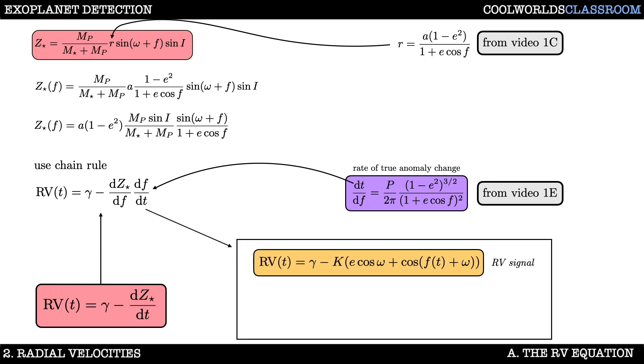After differentiating you should be able to show this result for the rv signal where k is a time invariable quantity known as the semi amplitude given by this. Now I want you to pause the video here and try deriving this for yourself, to do that differentiation and rearrangement step. Make sure that you get the same result.